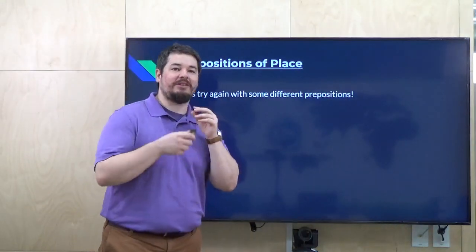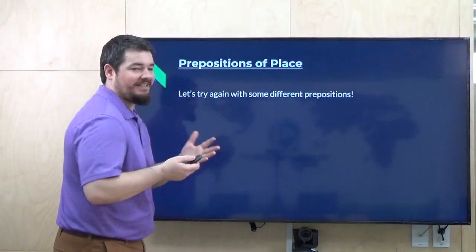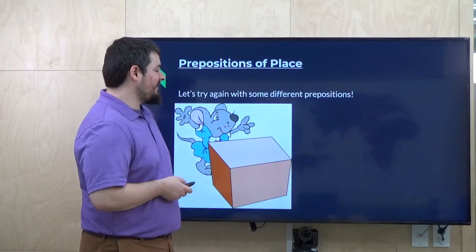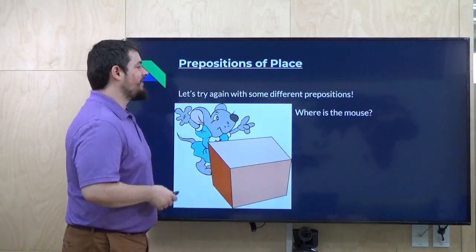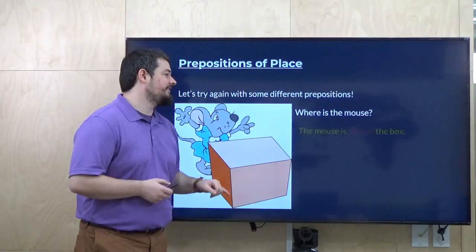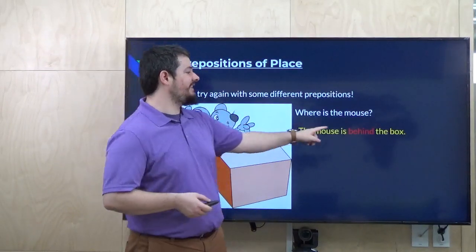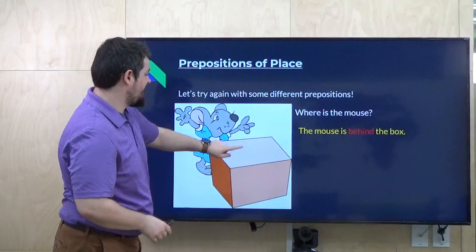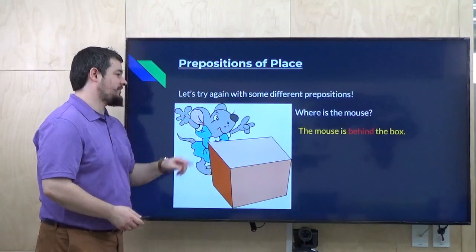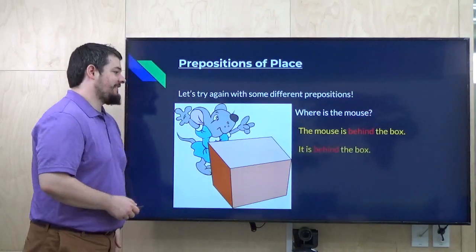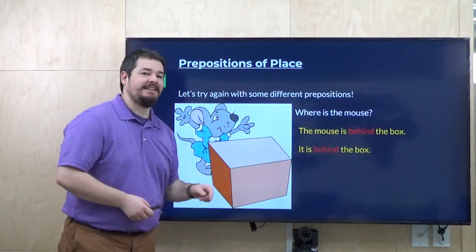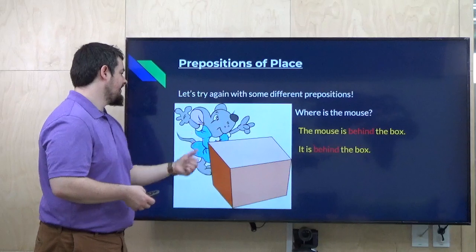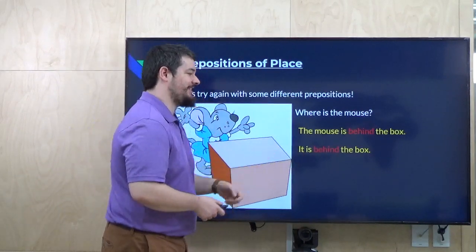We're going to look at some different prepositions. We already talked about 'under.' Here's a mouse and a box — classic picture. Where is the mouse? You can say, the mouse is behind the box. Behind means in the back. She is behind the box. I say 'she' because she has a nice dress. This mouse is very obviously a girl mouse, so you can say she. She is behind the box.